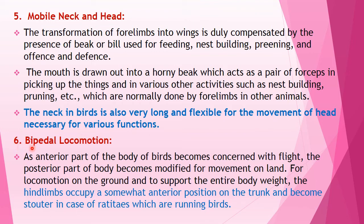The sixth morphological adaptation is bipedal locomotion. As the anterior part of the body becomes concerned with flight, the posterior parts are modified for movement on land. For locomotion on the ground and to support the entire body weight, the hind limbs occupy a somewhat anterior position on the trunk and become stouter, especially in ratites, which are running birds.